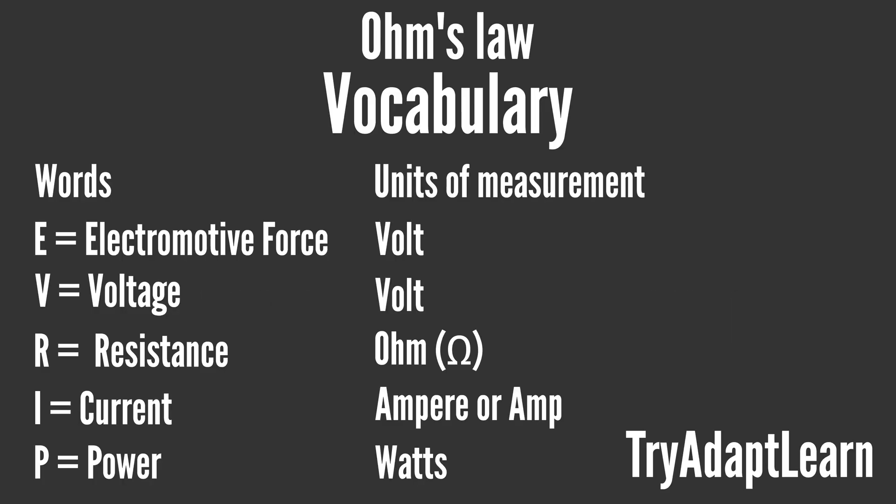Ohm's Law and its associated formulas help to describe the relationship between current, voltage, and resistance in an electrical circuit. So all of the vocabulary in these equations help to describe the true value of Ohm's Law, which is that in an electrical circuit there is a relationship between current, resistance, and voltage.